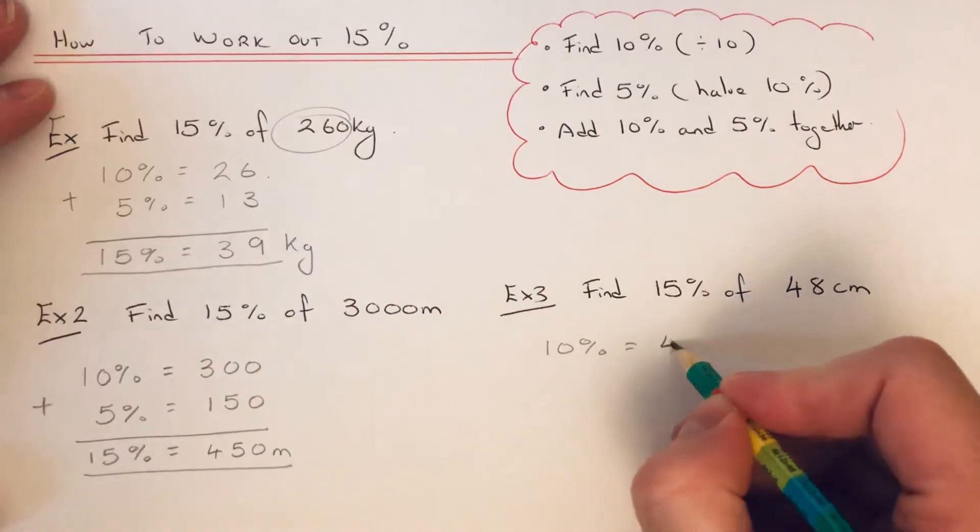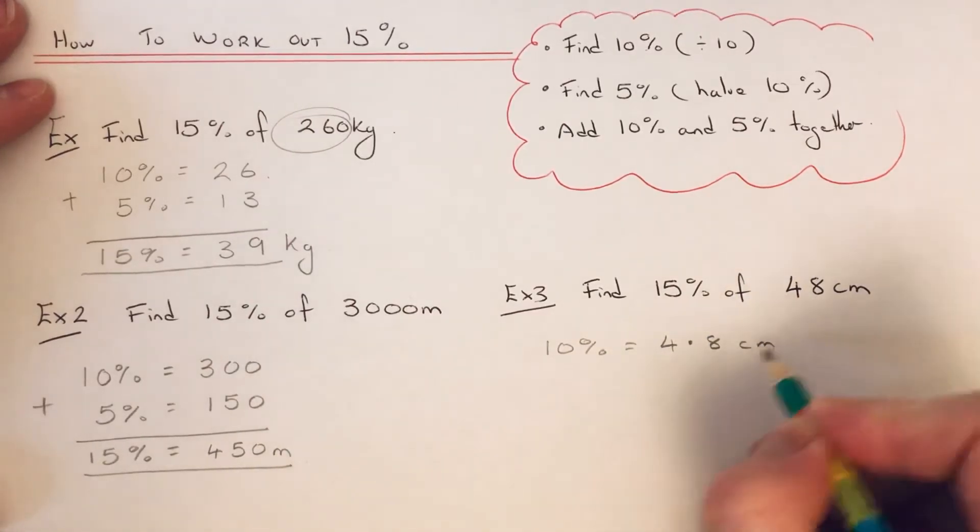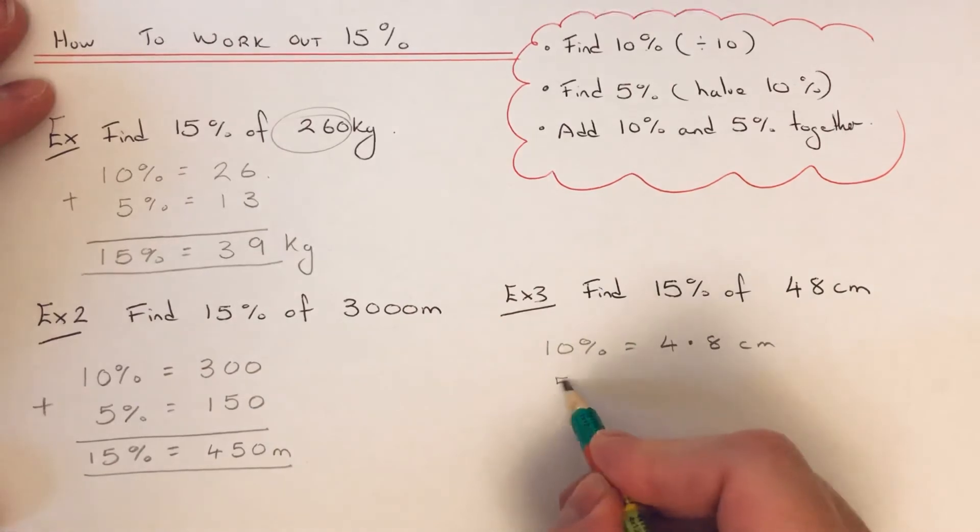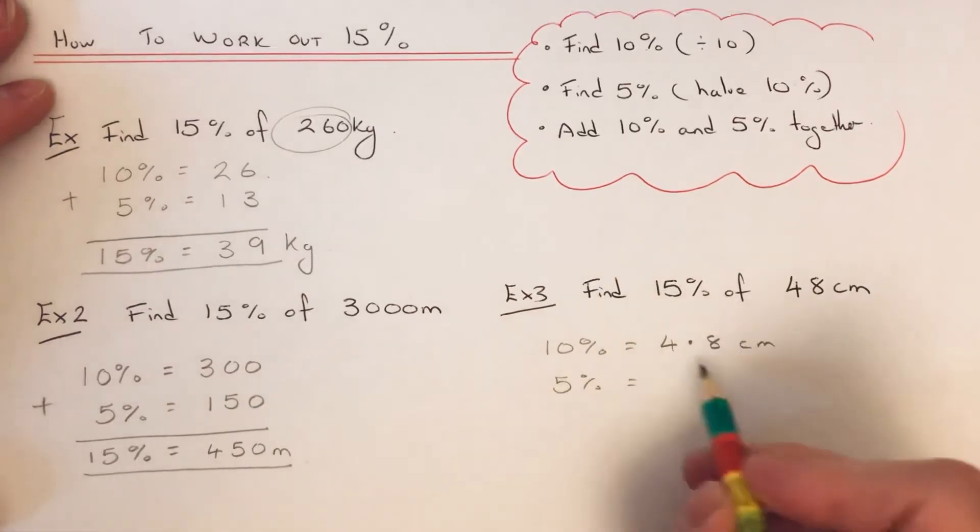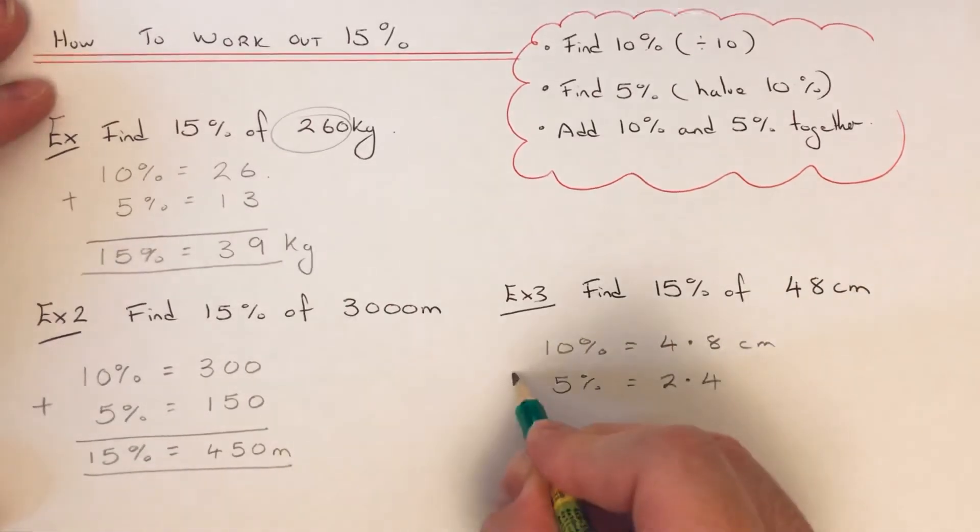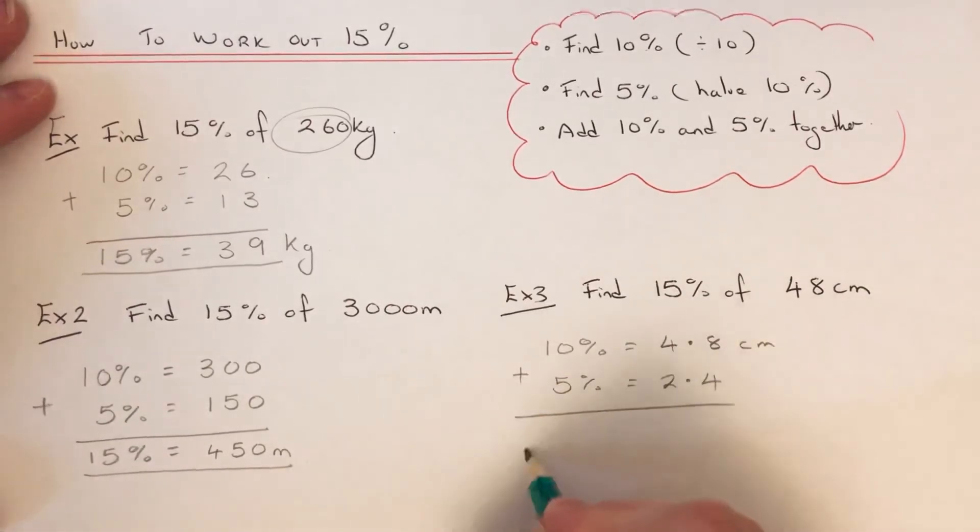which gives us 4.8 centimeters. We then do 5% by halving the 4.8, which is 2.4. So